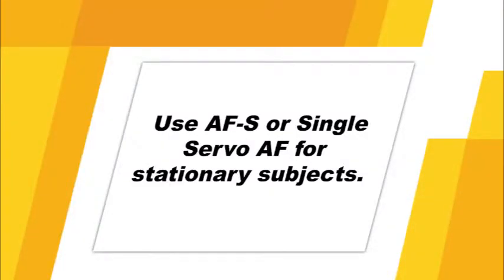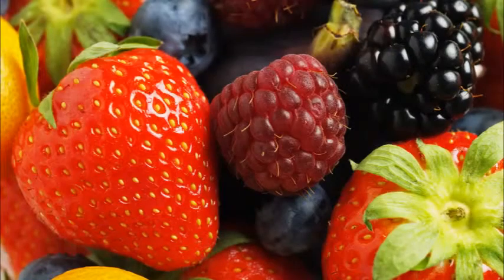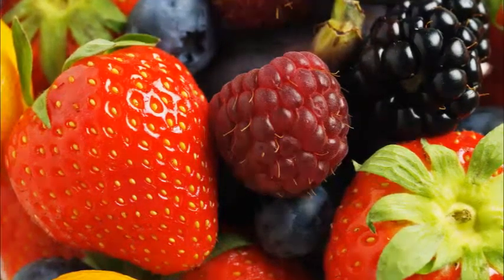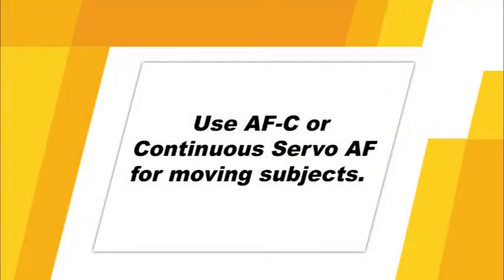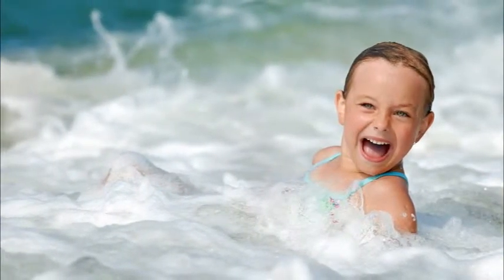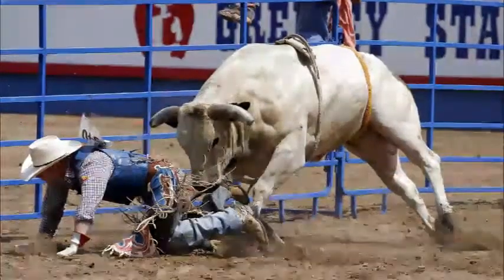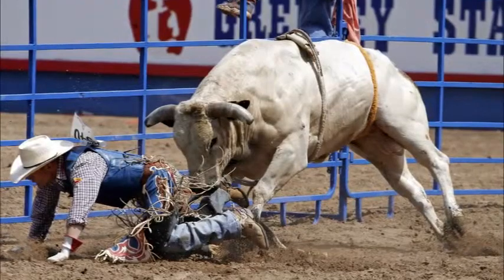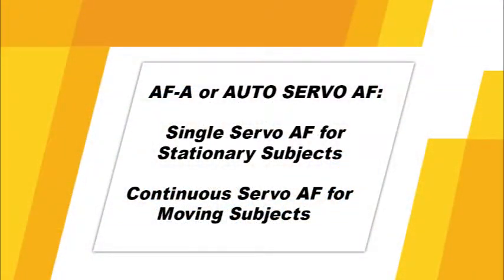AF-S or Single Servo AF is intended for use with stationary subjects. In this mode, the focus is locked when the shutter button is pressed halfway. This would be a good mode to choose if you're photographing products or you're doing portrait work with an older child or adult. AF-C or Continuous Servo Autofocus is a good mode to choose if you're photographing moving subjects. In this mode, the camera will focus continuously while the shutter button is pressed halfway. This mode is great if you're photographing a sporting event, small children, or animals. In AF-A or Auto Servo AF, the camera will begin focus using the Single Servo AF mode, and if the still subject starts moving, the camera will automatically switch to the Continuous Servo Focus mode.